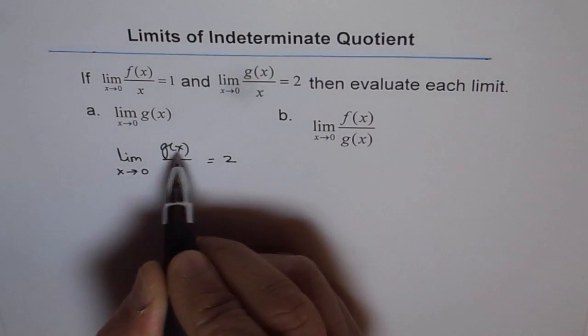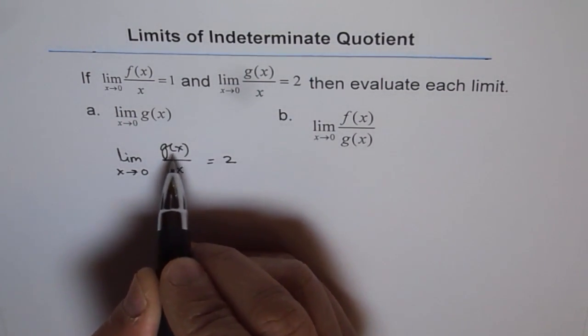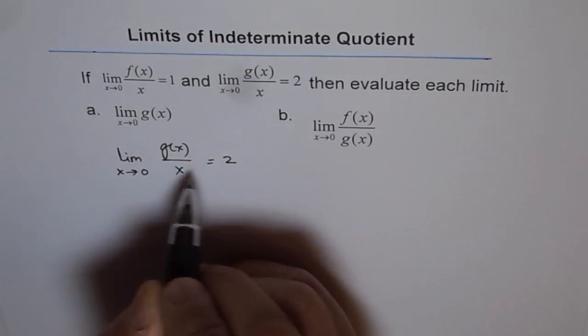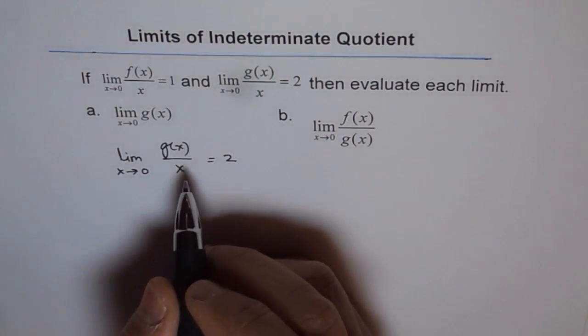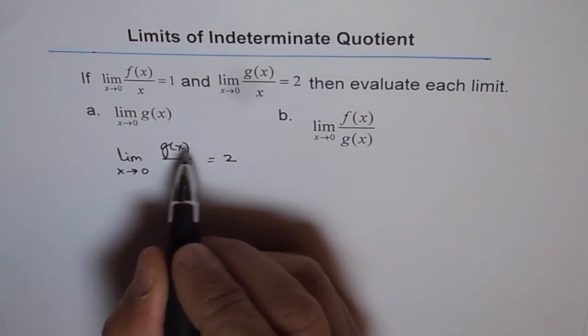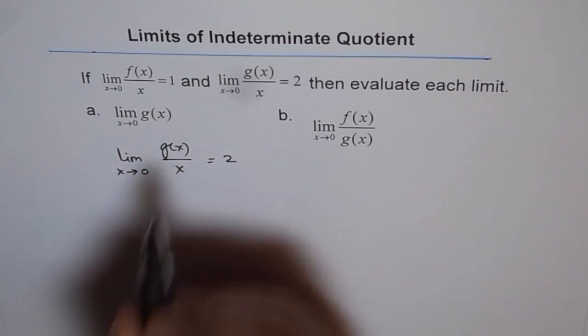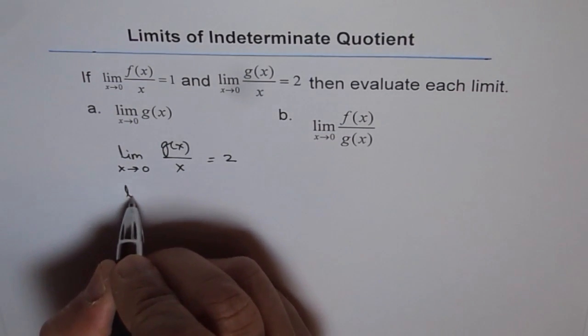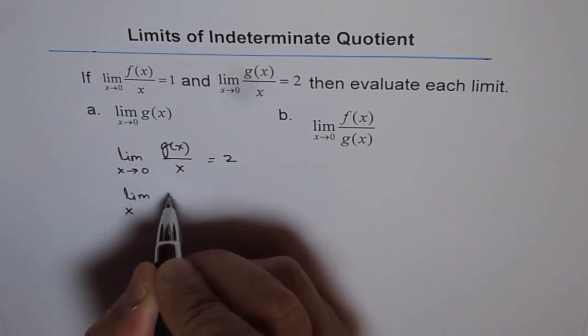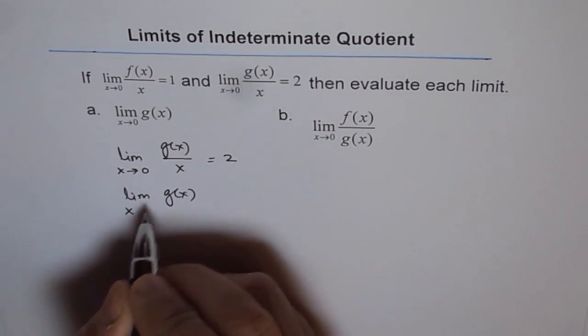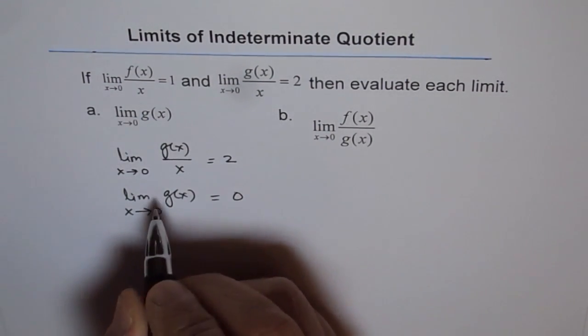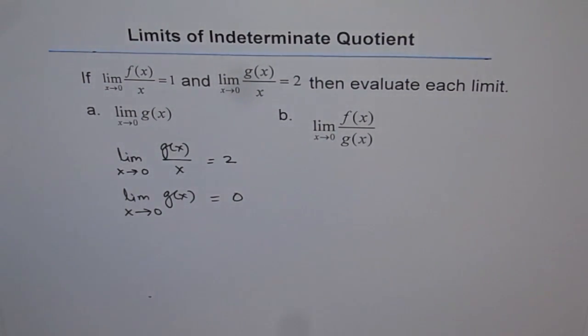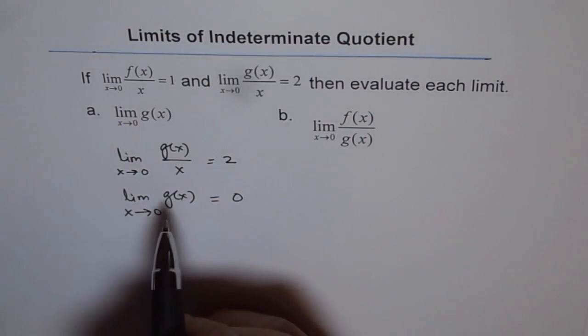That means g of x is x times h of x. Only then this limit of 2 is possible. Therefore, we can say that g of x has x in it. And if you want to know what is the limit of g of x as x approaches 0, it should be 0, because there is x. The factor x is in g of x.